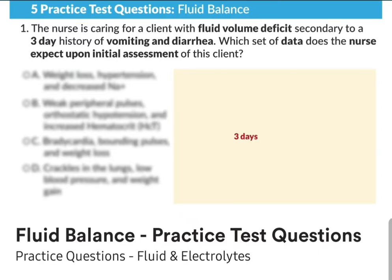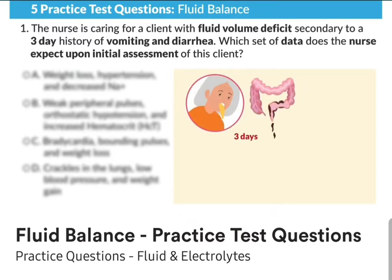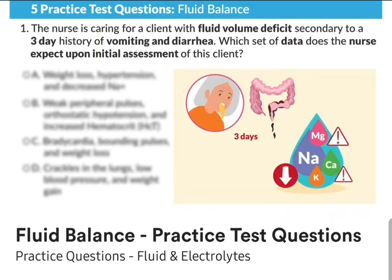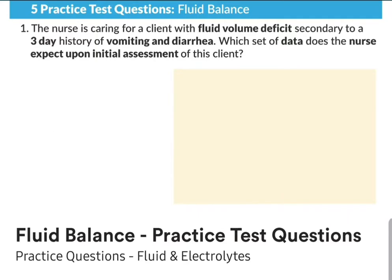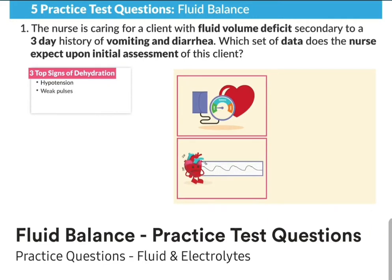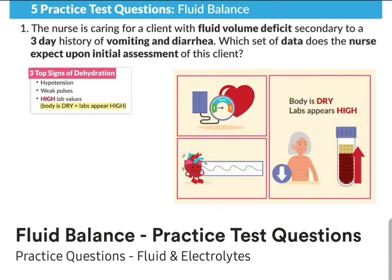The next key term is three days of vomiting and diarrhea — the electrolytes are going to be low or basically depleted. Because where fluids flow, electrolytes go out of the body. The question is asking for a set of data the nurse should expect upon initial assessment. Think of the top three signs of dehydration: hypotension, weak pulses, and high lab values, because when the body is dry, the labs appear high.